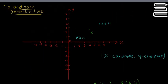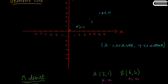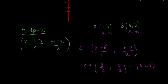...or it's equal to 4 and 2.5. So that means this point here C is 4 out on the x-axis and about 2.5 up on the y-axis.